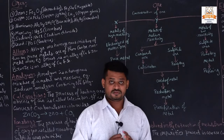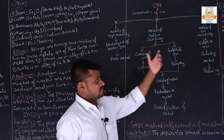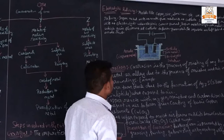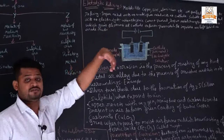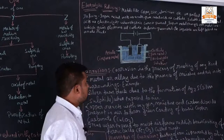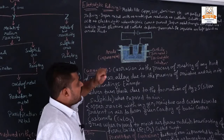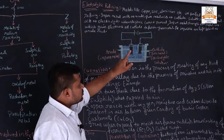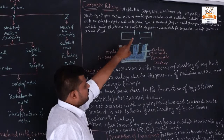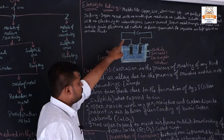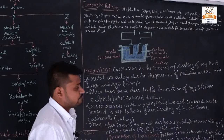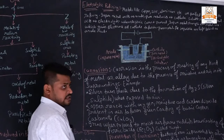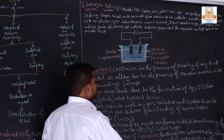Electrolytic refining is a process in which we use a solution to extract and purify metals from ores. Metals like copper, zinc, and aluminium are purified by electrolytic refining. Impure metal acts as the anode; pure metal acts as the cathode. Soluble salts of the metal act as the electrolyte. When electric current is passed through the solution, the electric current conducts easily and we pass it through the anode.